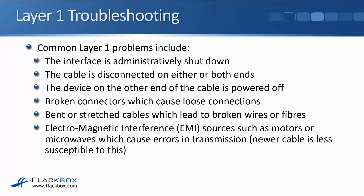If the cable is disconnected on one or both ends, you're not going to have any traffic going through there. Also, if the device on the other end of the cable is powered off, you won't have any traffic either. Broken connectors can cause loose connections — on an ethernet cable, the RJ45 connector clip is quite easy to break off, causing a loose connection. Bent or stretched cables can break the internal wires or fibers. Also, EMI — electromagnetic interference sources such as motors or microwaves — can cause errors in transmission.